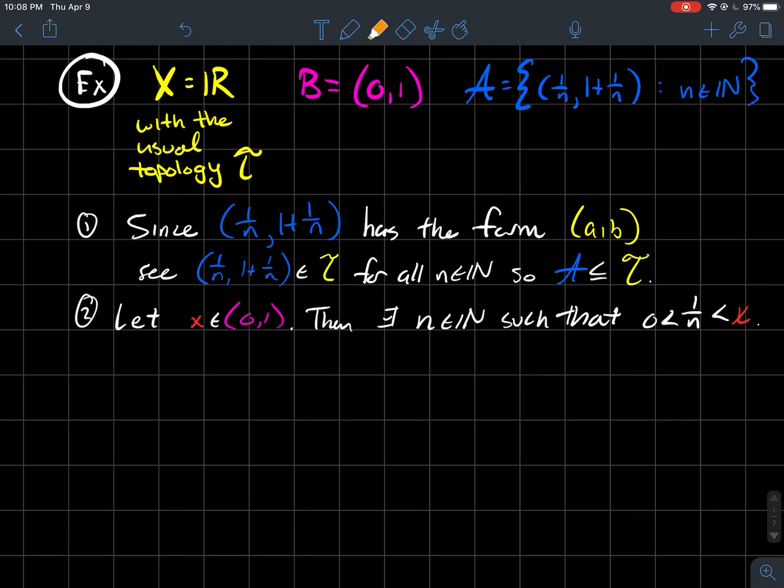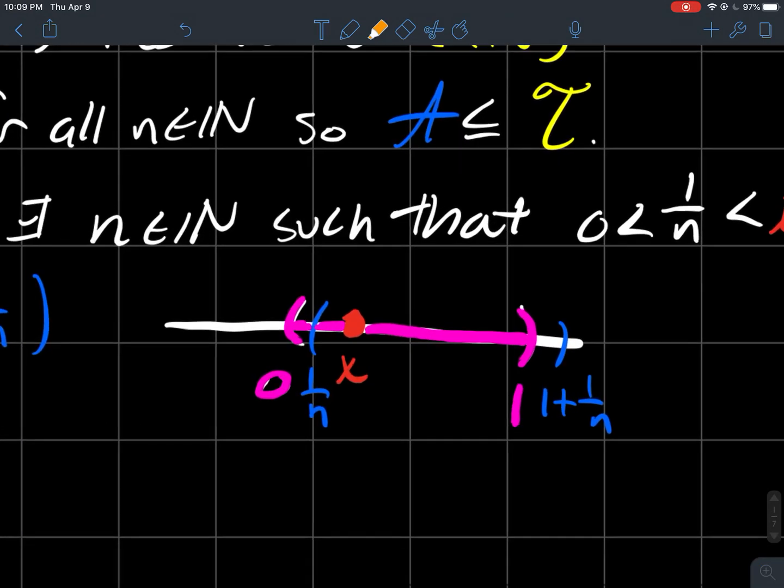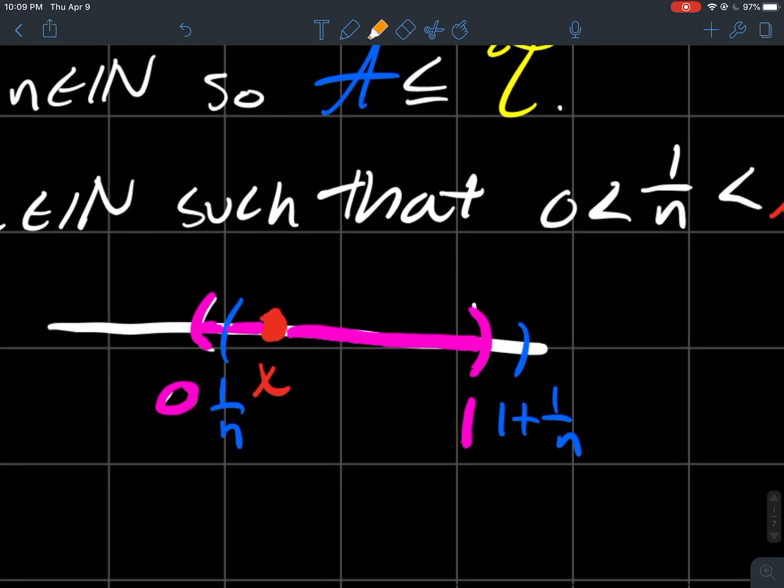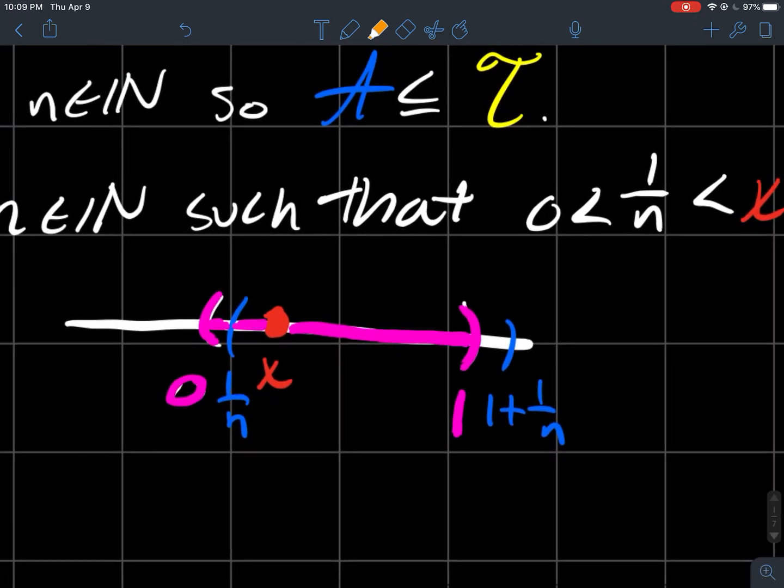So let's think about the real numbers. There exists a natural number such that one over N is smaller than that element X. If I was to draw you a picture, we've got an X somewhere. There exists a natural number so that one over N is to the left of X.